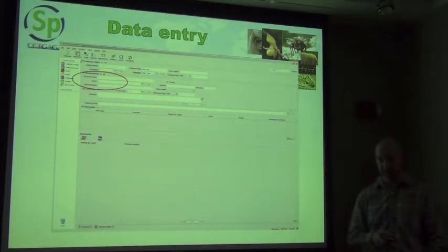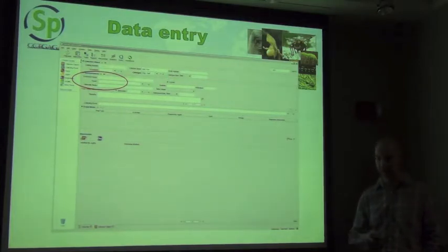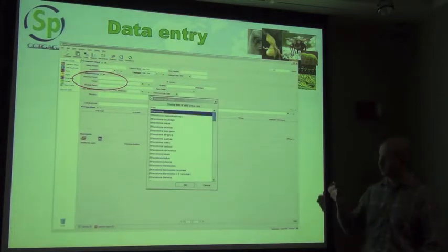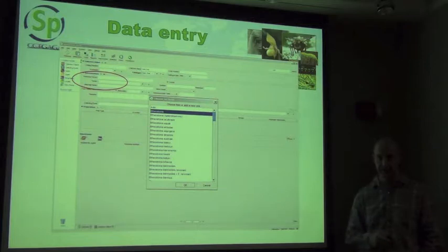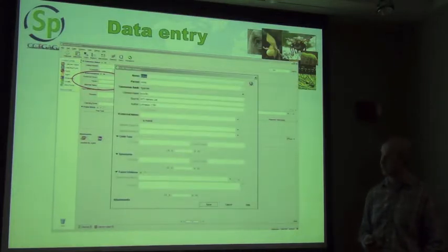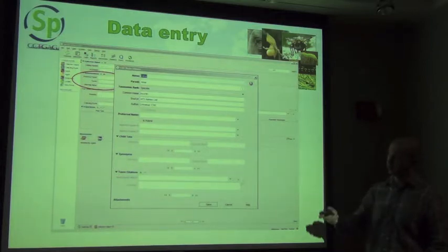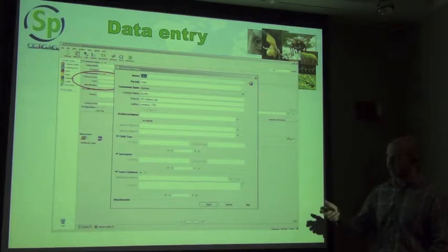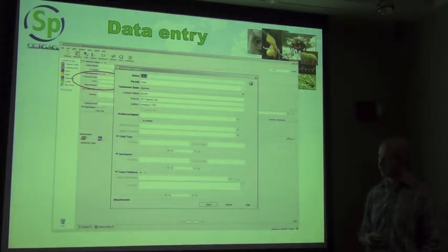Things available through a data entry form include authority files for taxonomy, geography, and similar items. Going to the taxon field and typing the first letters of a taxon entry will bring up a pick list of all items in your taxonomic tree. You can select a name or click Add at the top to add a new taxonomic entry, filling in common names, authors, citations, and all associated information.